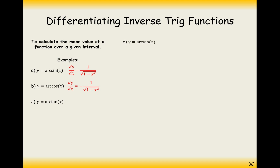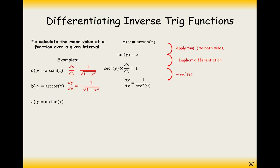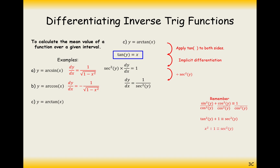For arctan, tan both sides, then implicitly differentiate. The implicit differentiation of tan y gives sec² y · dy/dx. Divide by sec² y to get dy/dx = 1/sec² y. Using the identity tan² y + 1 = sec² y (derived by dividing sin² + cos² = 1 by cos²), and since tan y = x, sec² y = x² + 1. So dy/dx = 1 over (x² + 1).